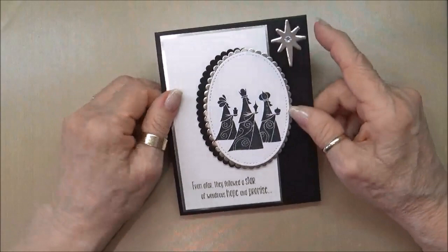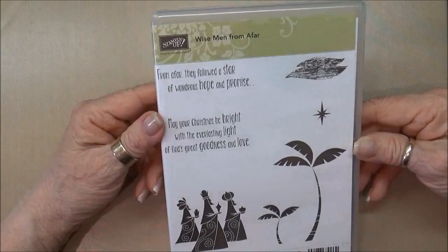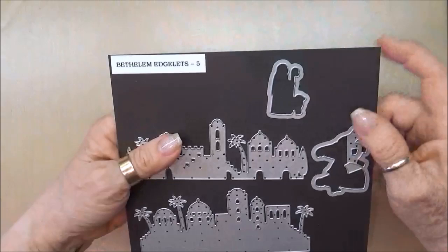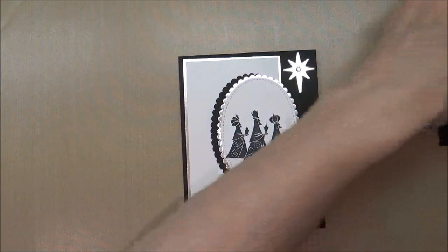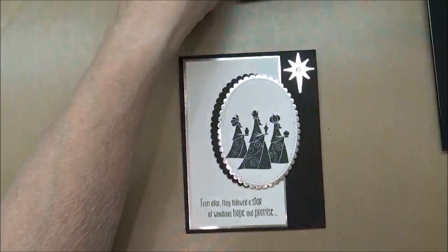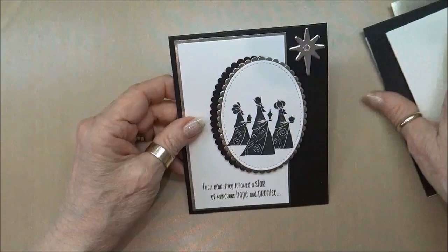Today I'm going to be using this new stamp set from Stampin' Up! It's called Wise Men From Afar and then I'm going to be using the Star die from the Bethlehem Edgelets and I will also be using the layered ovals and the stitched shapes dies for this card. So let's get started.